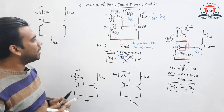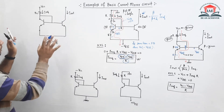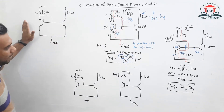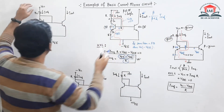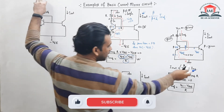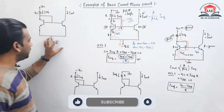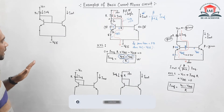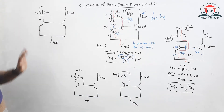Now let us move to example number three. In this example, we have to find the value of VCC such that the current mirror circuit will work. So we need to determine the minimum VCC for proper operation.